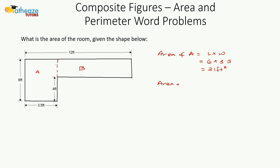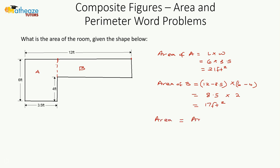Area of B runs from this point to the end of the rectangle. The length is 12 minus 3.5, and the width is 6 minus 4. So 12 minus 3.5 is 8.5, and 6 minus 4 is 2, giving us 17 square feet. The total area of the figure is area A plus area B: 21 square feet plus 17 square feet equals 38 square feet.